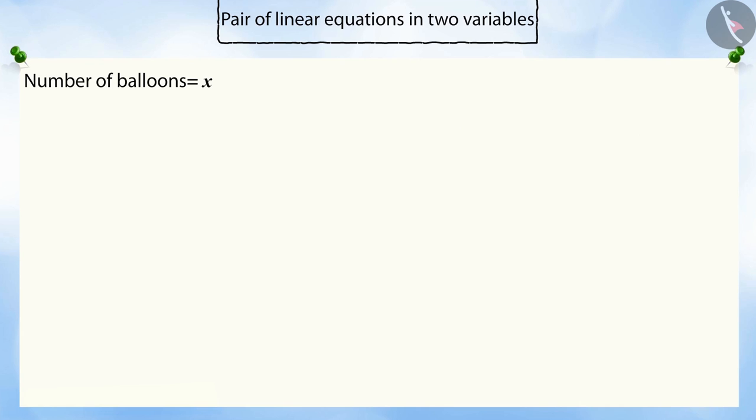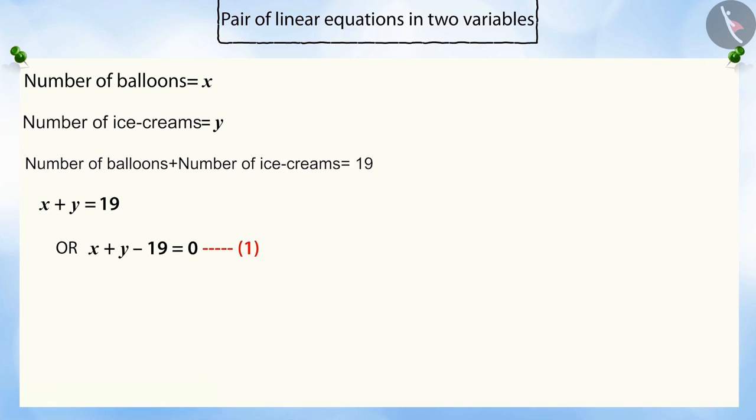Let x be the number of balloons that Rahul bought. And y be the number of ice creams he bought. And Rahul also knows that the total number of both items is 19. With this information, we can form the first equation which will be x plus y equals 19 which can also be written as x plus y minus 19 is equal to 0.